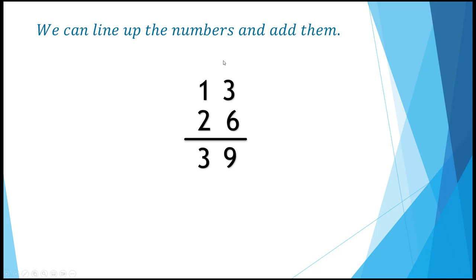Without the place value bars, we line up the digits and add them. 3 plus 6 is 9. 1 ten and 2 tens is 3 tens. 39.